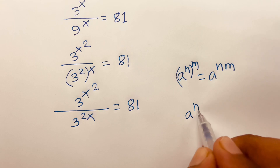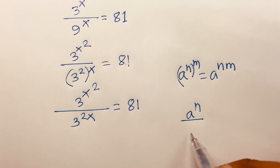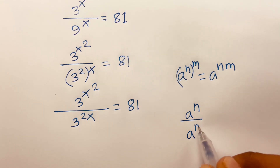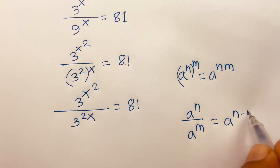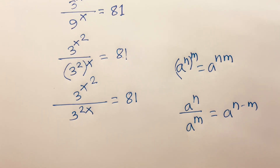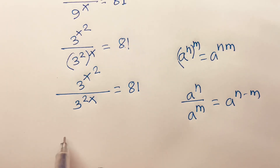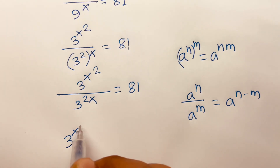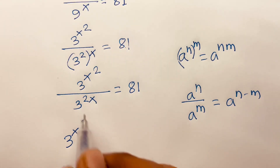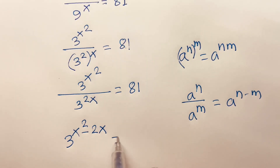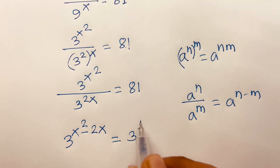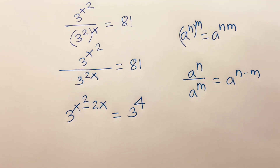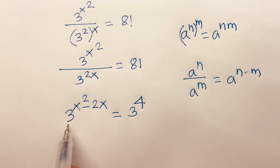Then we know that a to the power n over a to the power m is equal to a to the power n minus m. According to these rules, I can say both bases are the same, so 3 power x squared minus 2x is equal to 81, which is 3 power 4.